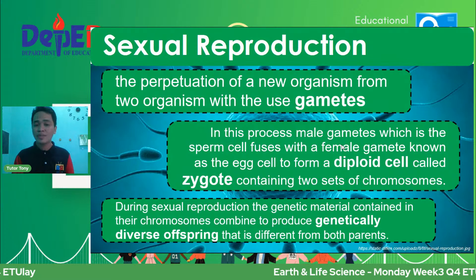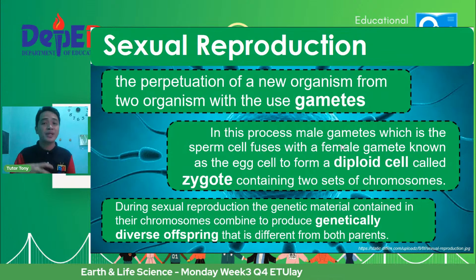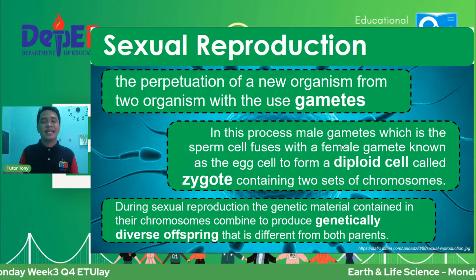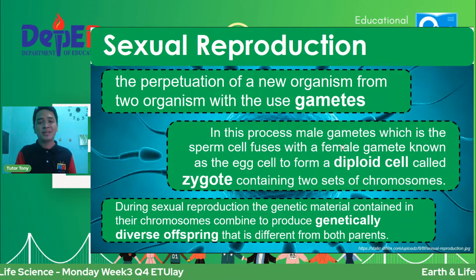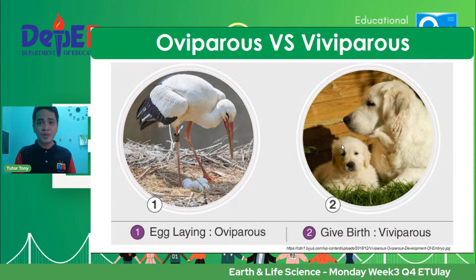During sexual reproduction, the genetic material contained in the chromosomes combines to produce genetically diverse offspring. So yung offspring or anak is different from the parent — hindi siya clone tulad ng sa asexual. It is a unique combination — a product of the male and female DNA combined. Kaya nagkakaroon ng variety sa mga living organisms, just like us.